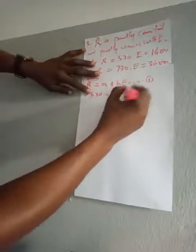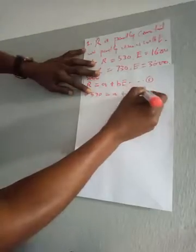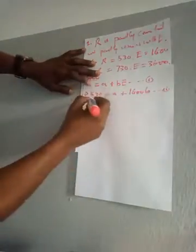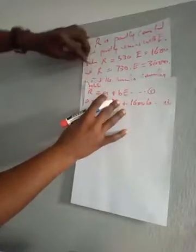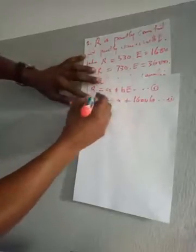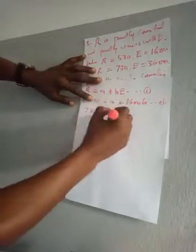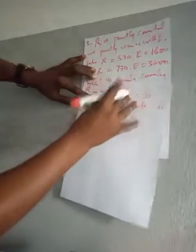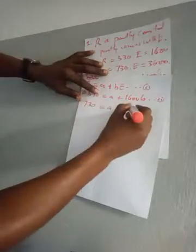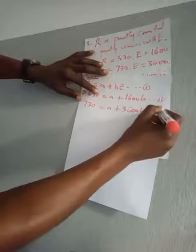When r is 530, it implies that 530 equals a plus 1600b — call this equation 2. Then when r is 730, we have 730 equals a plus 3600b — call this equation 3.